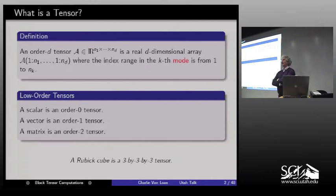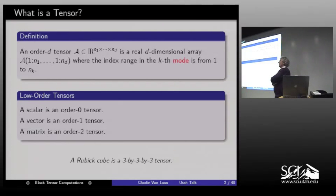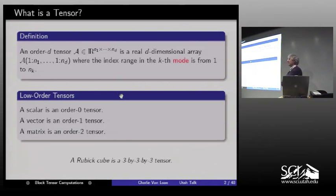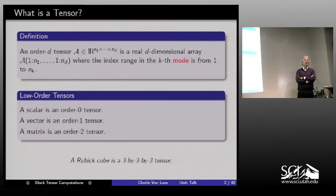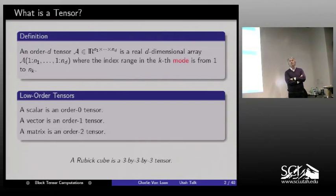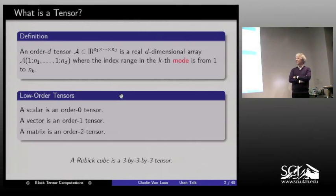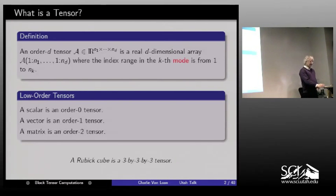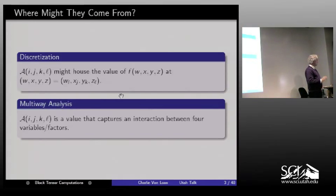A matrix is a second-order tensor. Instead of A-I-J, I have A-I-J-K-L. These data objects get big quickly, and they are occurring with increasing frequency. We've played with zeroth, first, and second-order tensors all our lives — you can think of a Rubik's cube as a 3×3×3 tensor.